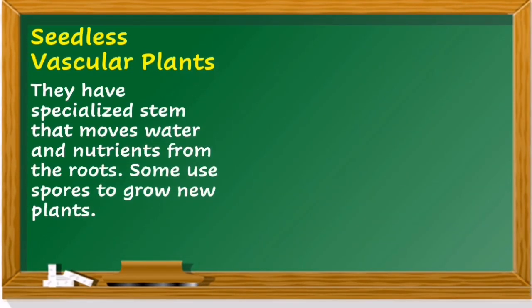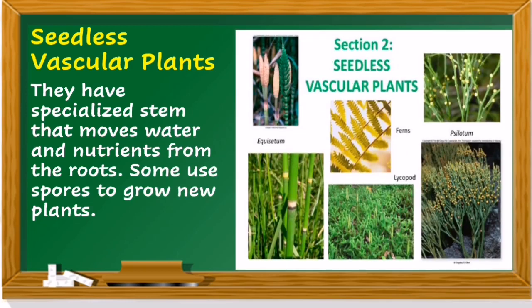Seedless vascular plants have specialized stems that move water and nutrients from the roots. Some use spores to grow new plants. Examples of seedless vascular plants include ferns and others.